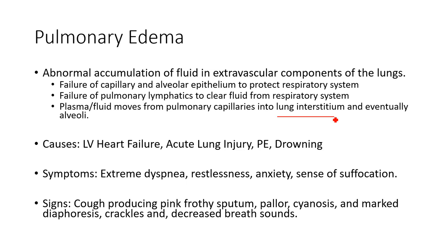Plasma fluid moves from the pulmonary capillaries into the lung interstitium and eventually into the alveoli. Either something causes the lymphatics to fail — they're holding on to more fluid, the lungs aren't draining — or the pulmonary capillaries become too engorged. Fluid then moves from the pulmonary capillaries into the lung interstitium; the pressure gets too high and eventually spills over into the alveoli, causing serious problems because we're disrupting the alveolar capillary interface. Causes can include left ventricular heart failure, acute lung injury, pulmonary embolisms, and drowning.